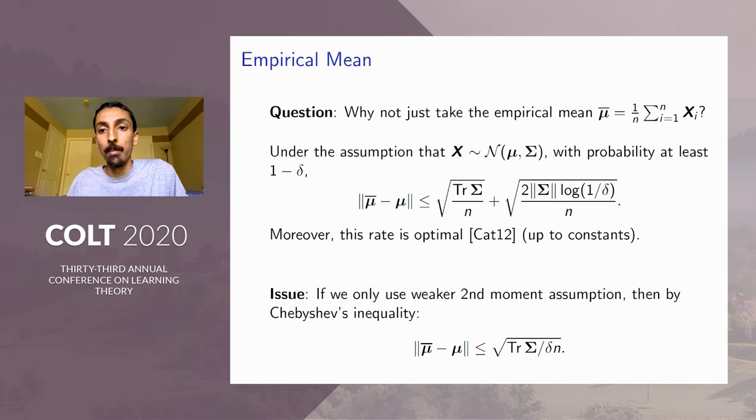So the very natural question is, why not just take the empirical mean? That is, we just average the n samples as our estimate. So if we make the strong assumption that the original random vector X is multivariate Gaussian with mean μ and covariance Σ, it can be shown that with probability at least 1-δ, the radius achieved by the empirical mean is displayed as follows.